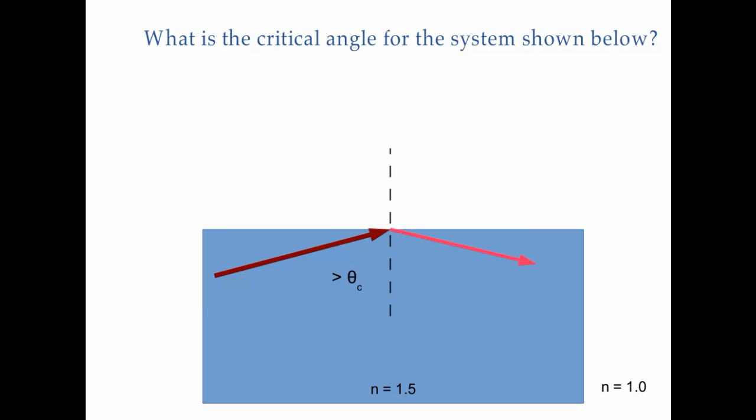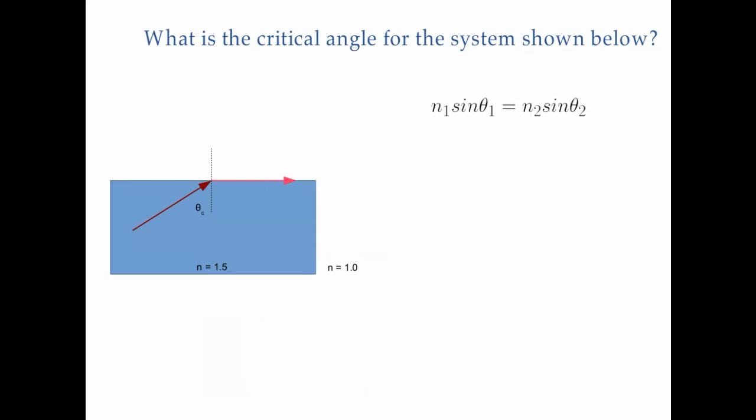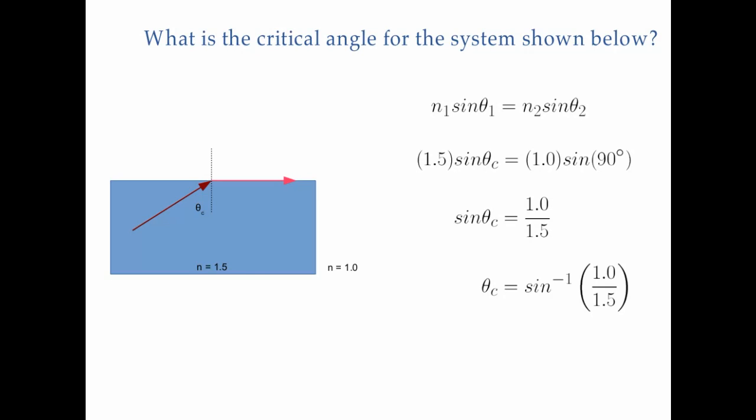What we want is that theta critical, where the light is just skimming along the surface. Starting with Snell's law: N1 sine theta1 equals N2 sine theta2. In this case, N1 is 1.5 and theta1 is theta critical; N2 is 1 and theta2 is 90 degrees, because the pink ray runs along the surface — 90 degrees with respect to the perpendicular. Since sine of 90 is just 1, we get sine of theta critical equals 1 over 1.5. Taking the arc sine gives us 41.8 degrees.